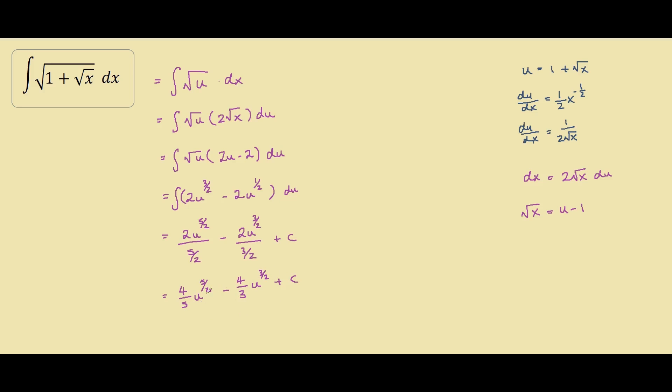And our last step is to replace the u's with 1 plus square root of x. So we have 4 fifths times 1 plus square root of x to the 5 over 2 minus by 4 thirds times 1 plus square root of x to the 3 over 2 plus c. And that's the answer.